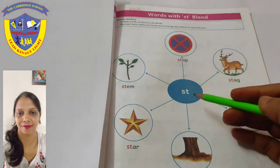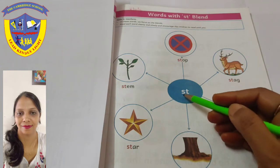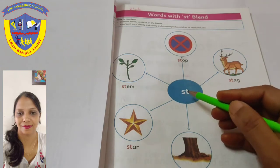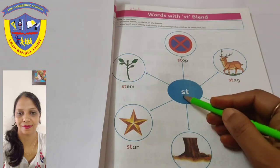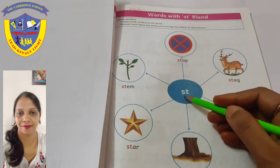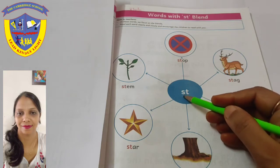First, speak with me: St. S sound — S. T sound — T. St. What is this? St.